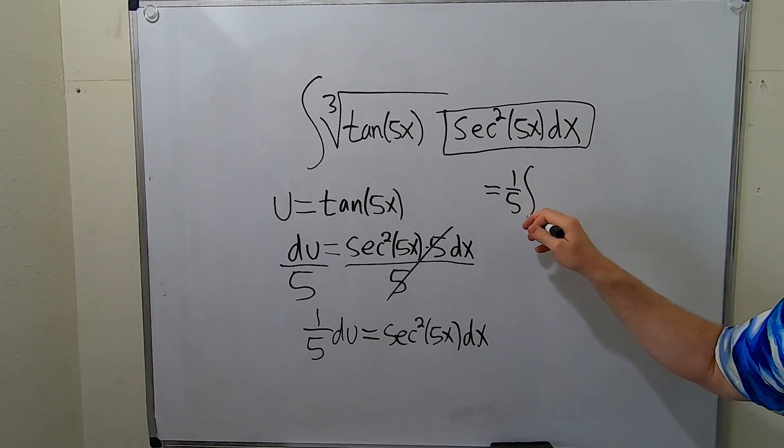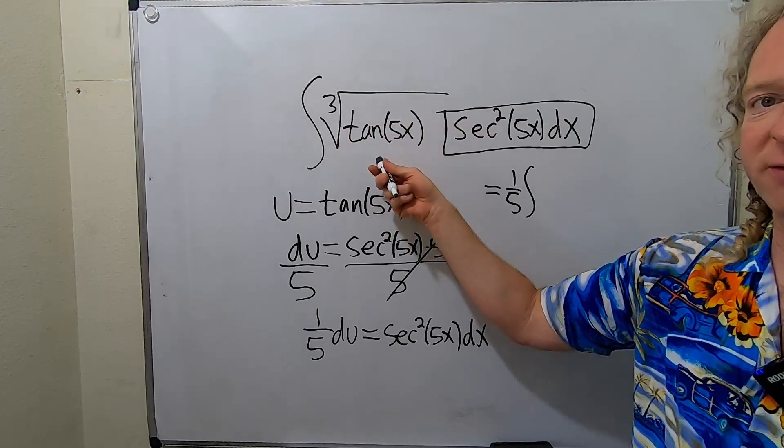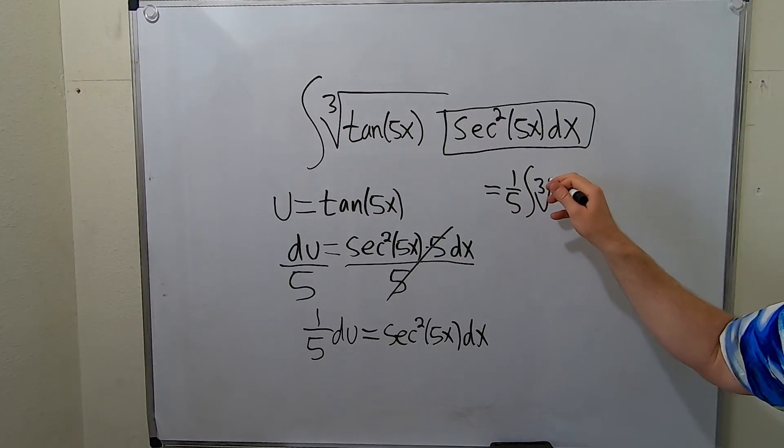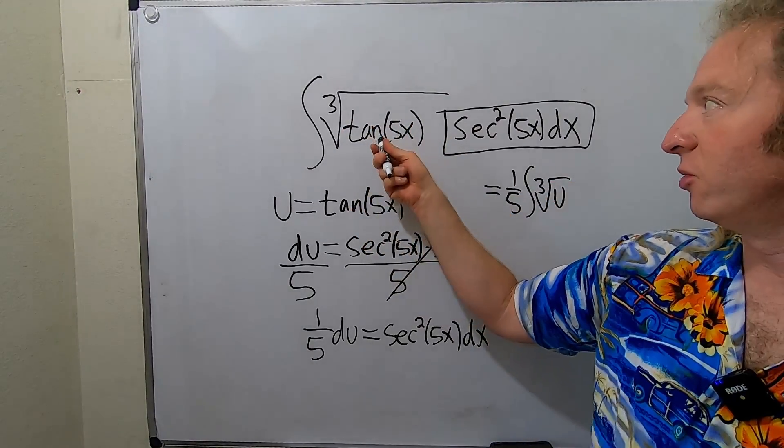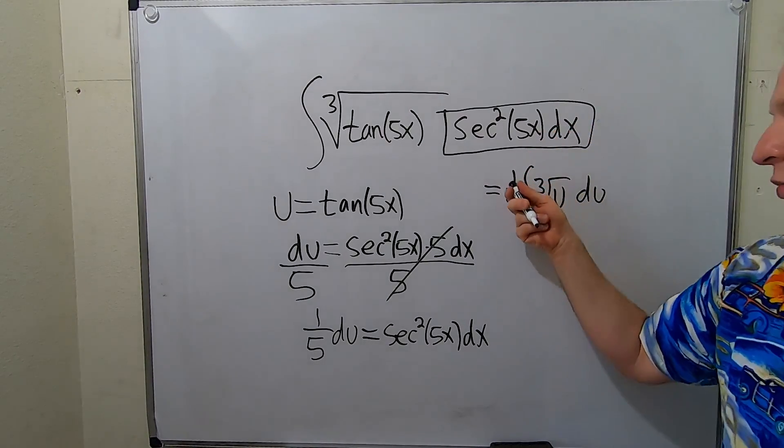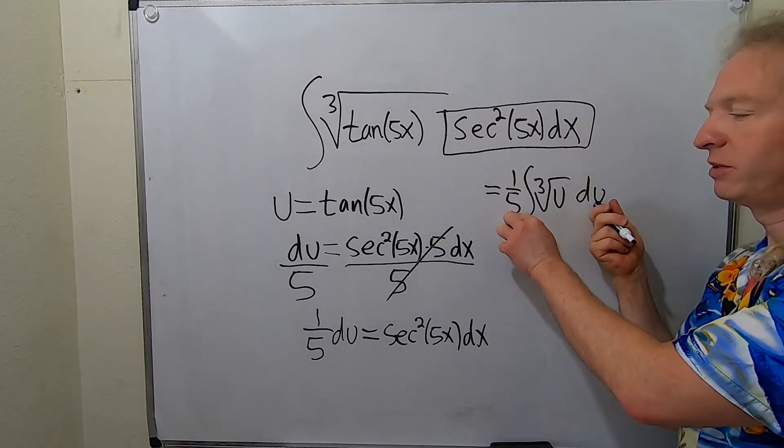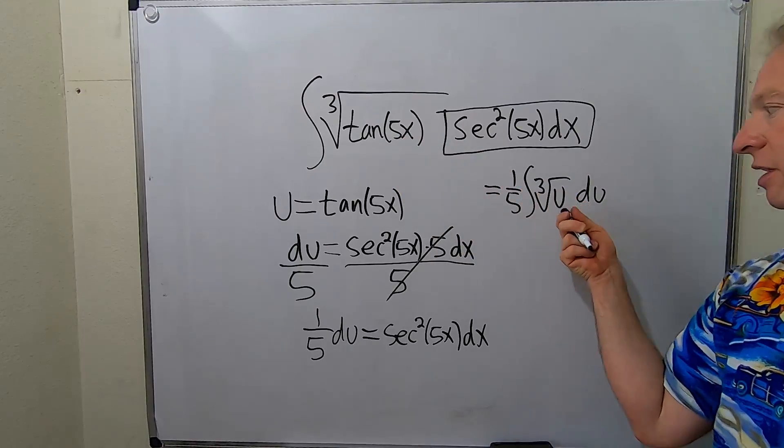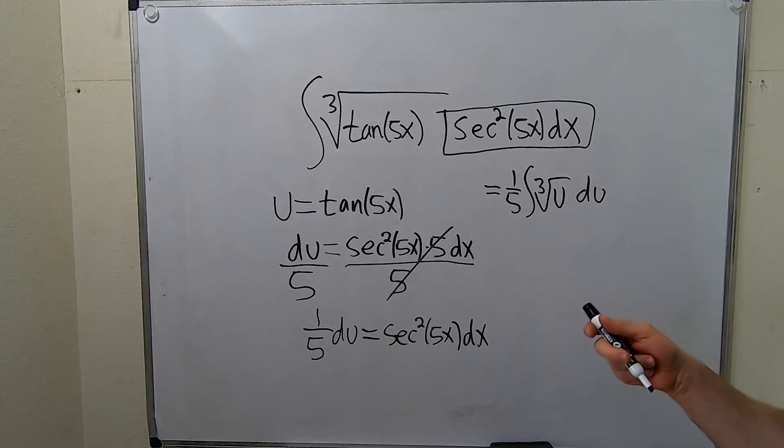So this is 1 fifth integral cube root of tangent 5x. So cube root of u, because that's our u. And this piece here is du times 1 fifth. So this becomes this, and then this is this. We have to integrate this.